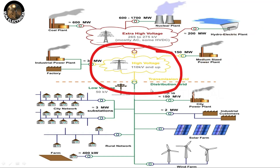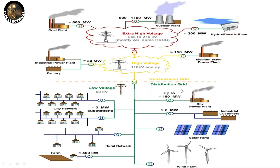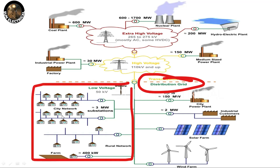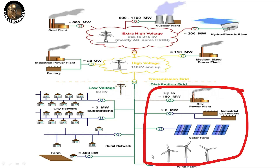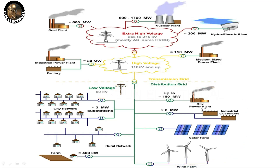The grid and the distribution grid are on the consumer side. It is low voltage, 50 kV. Solar and wind power plants connect directly to the distribution grid.